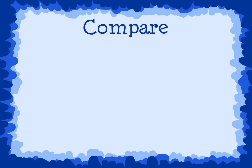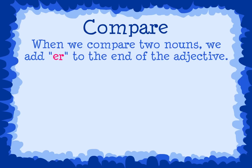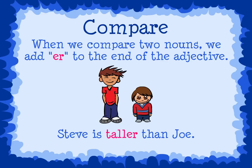We can also use adjectives to compare two or more nouns. When we compare two nouns, we add ER to the end of the adjective. For example, Steve is taller than Joe. We are comparing two people, Steve and Joe, so we add ER to the adjective tall.